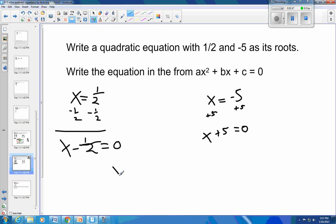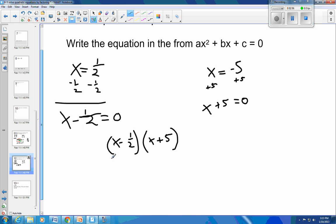x plus 5 equals 0. From there, you want to take your two binomials and multiply them together. So x minus 1 half times x plus 5.